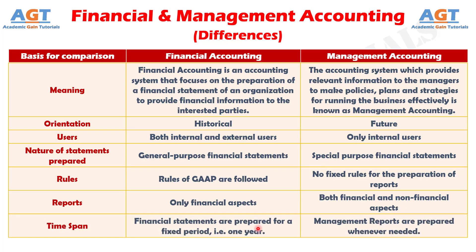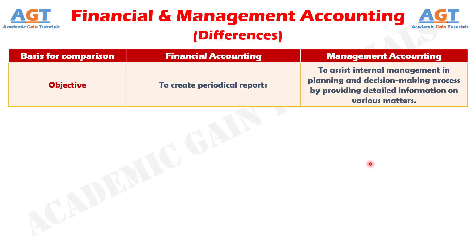Number seven: In Financial Accounting, financial statements are prepared for a fixed period, i.e. one year, whereas in Management Accounting, management reports are prepared whenever needed. Number eight: The objective of Financial Accounting is to create periodical reports, whereas the objective of Management Accounting is to assist internal management in planning and decision making process by providing detailed information on various matters.